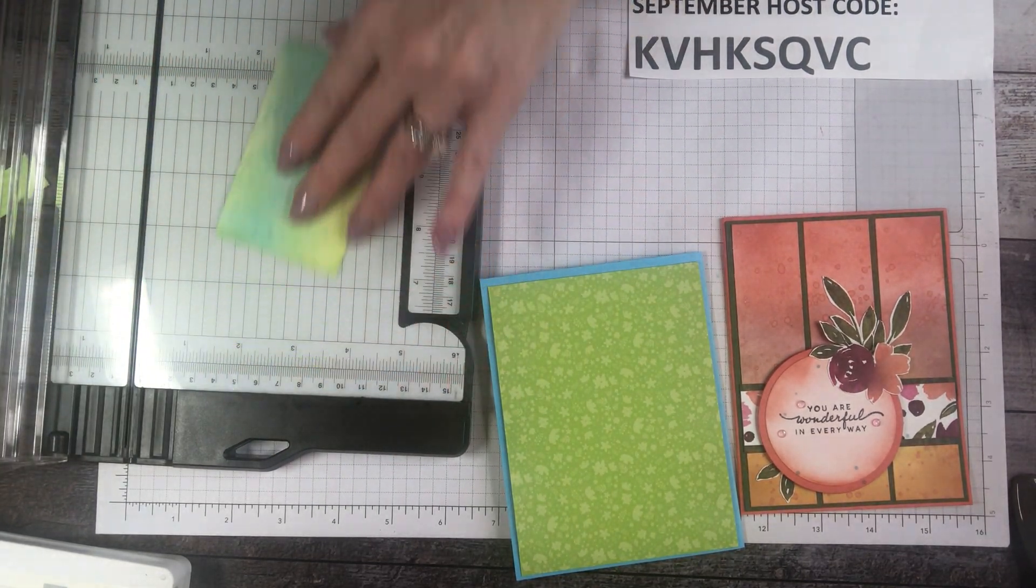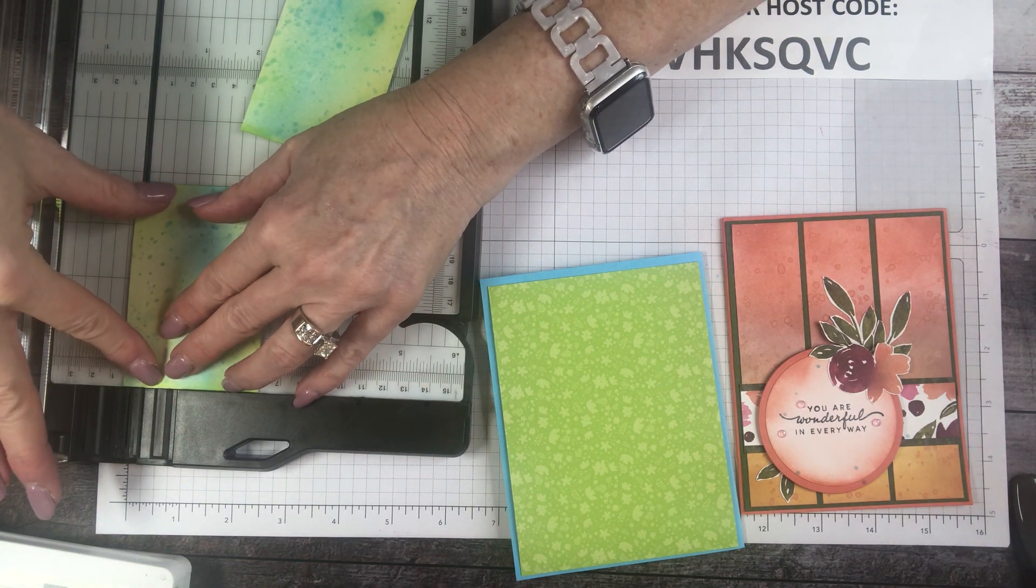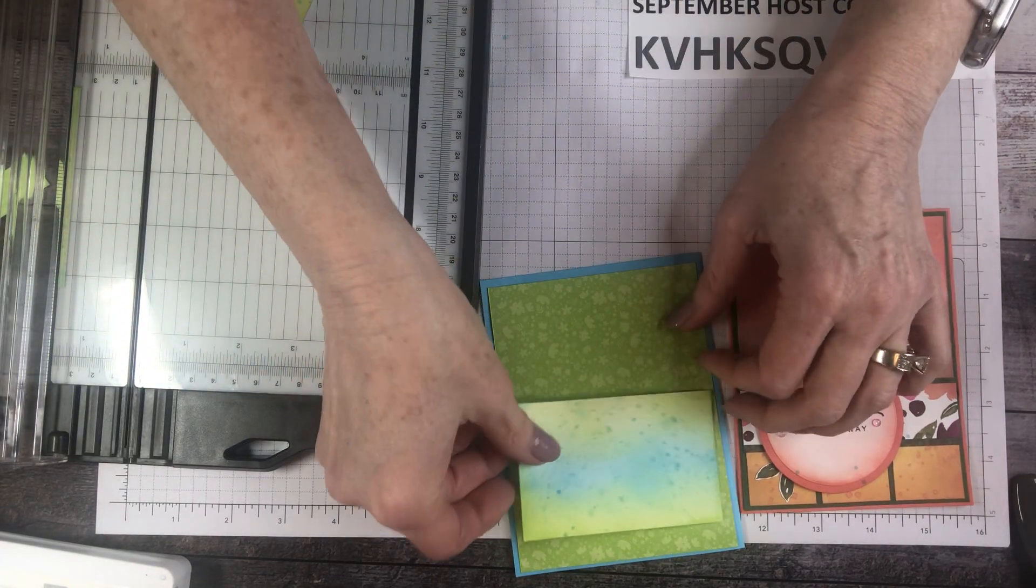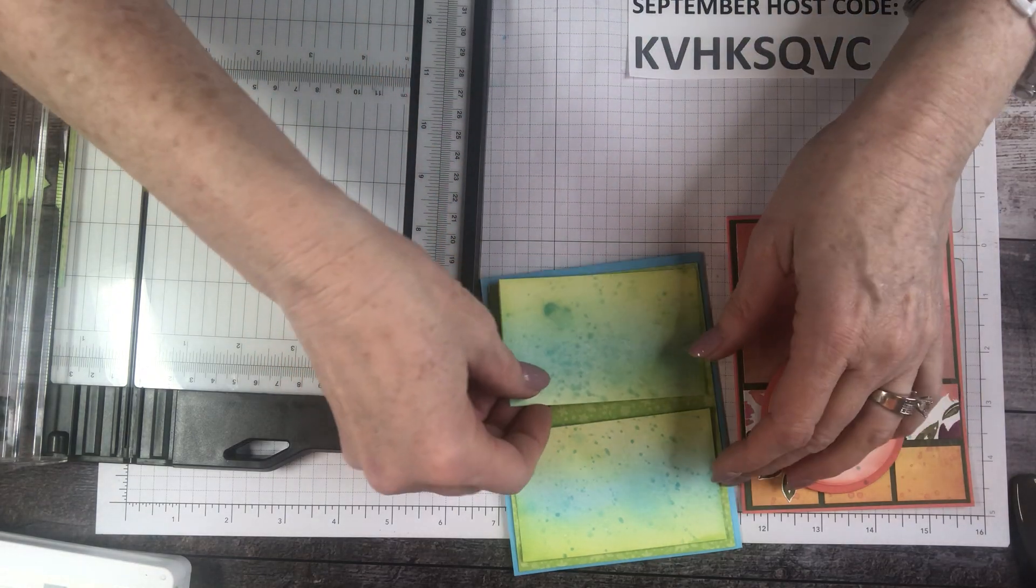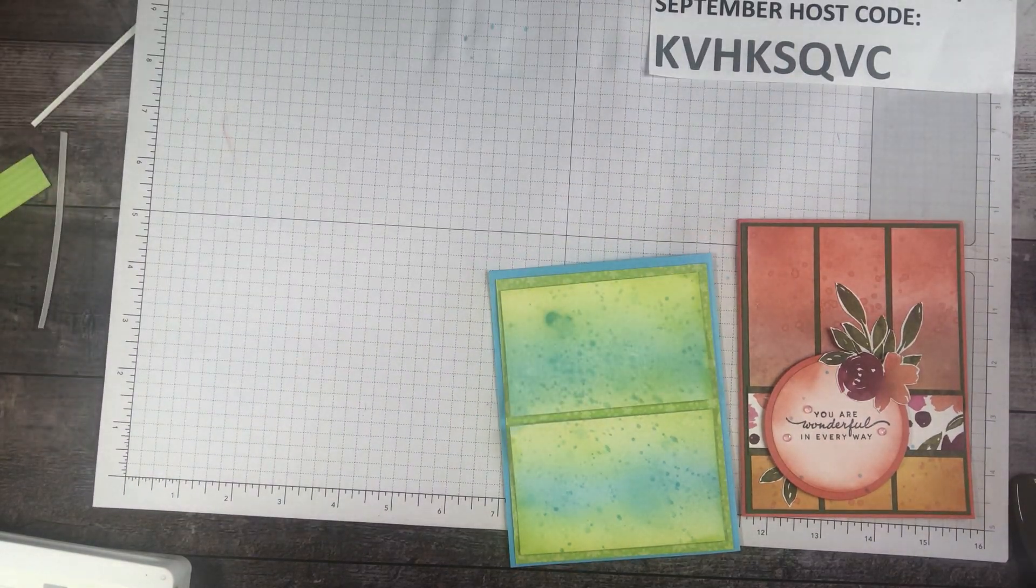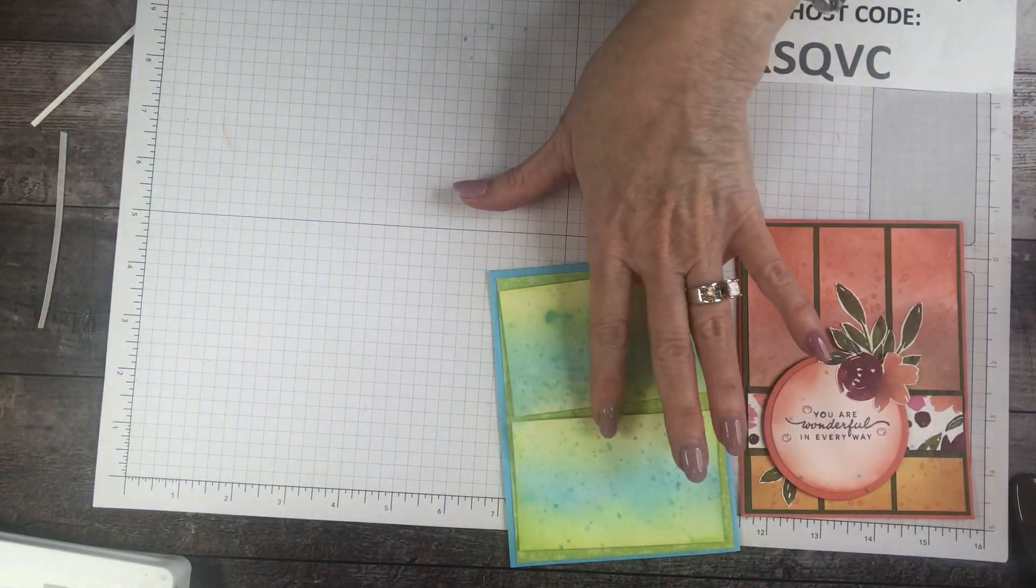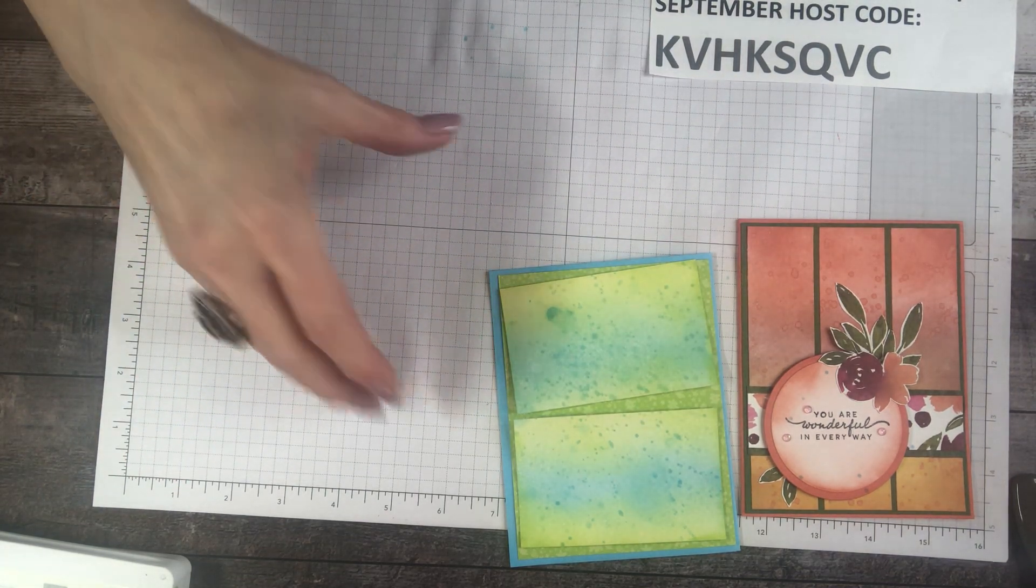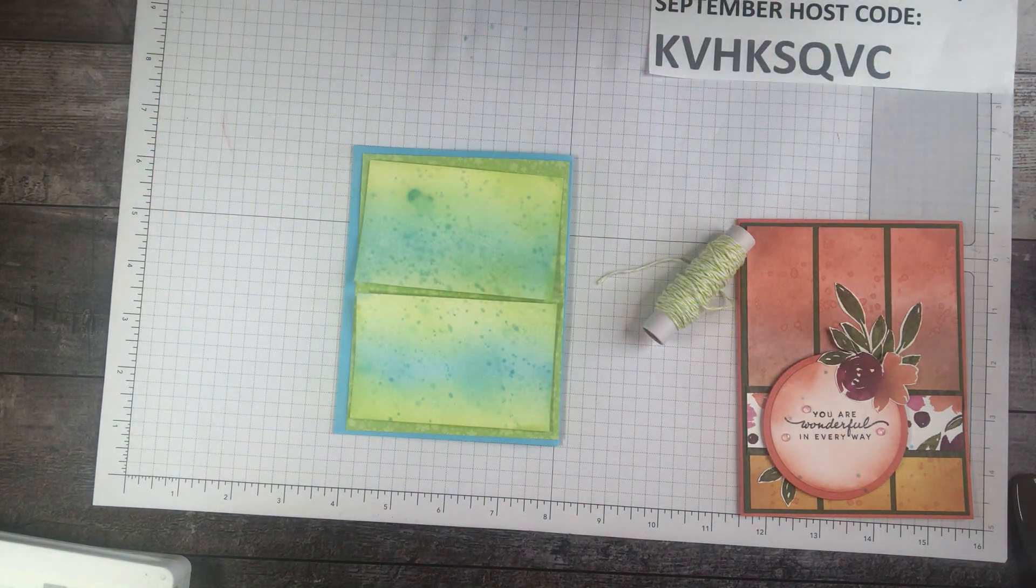Let me see if that gives us enough of a little definition in the very center where it'll show through our print. Yeah, I like it. I was actually going to do a strip down the middle, but I like the look of this much better. It just looks all artsy to me. I feel like it does.